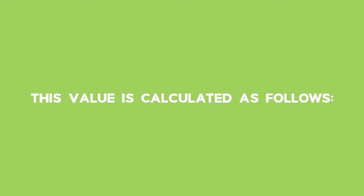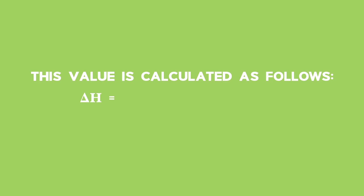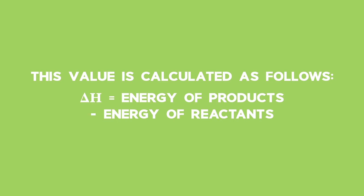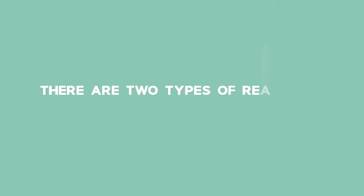This value is calculated as follows. Delta H is equal to energy of products minus energy of reactants. There are two types of reactions based on energy.